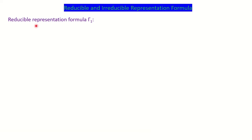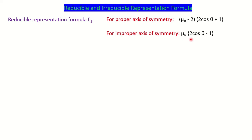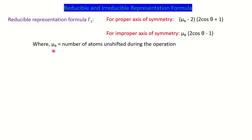First we will see the formula related to reducible representation. We have two formulas: one for proper axis of symmetry, which is μr(2cosθ + 1), and the other for improper axis of symmetry, which is μr(2cosθ − 1). Here μr is the number of atoms unshifted during the operation.